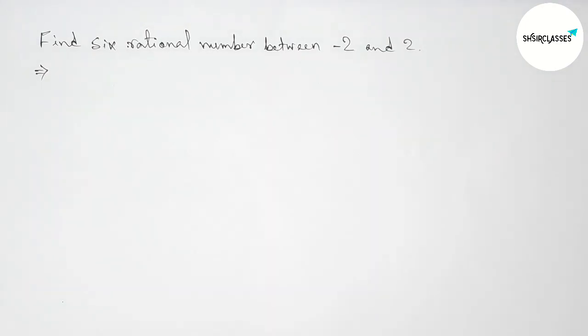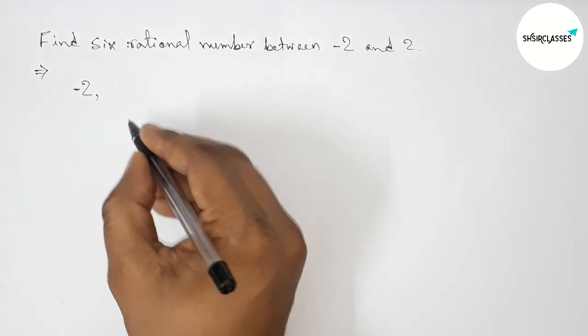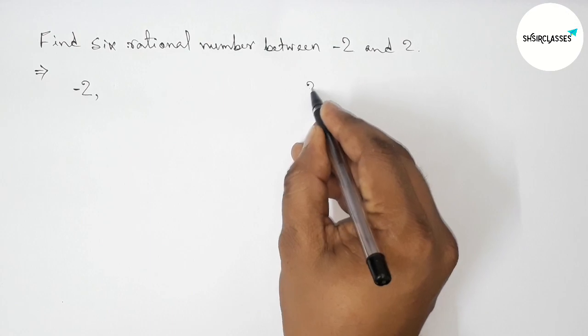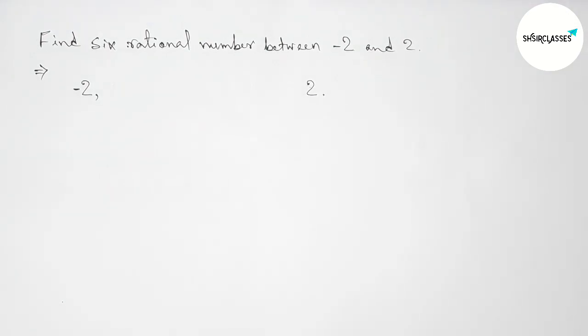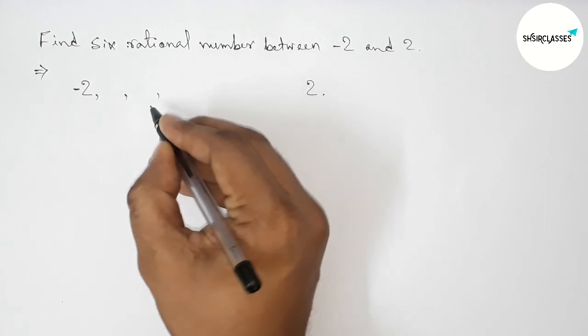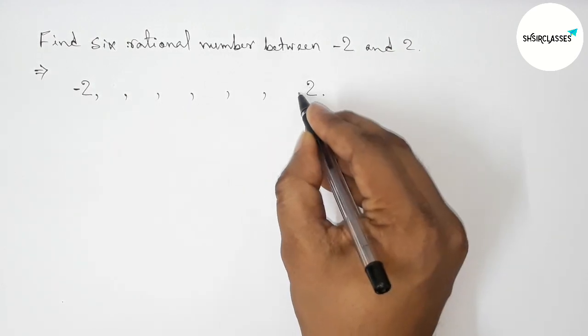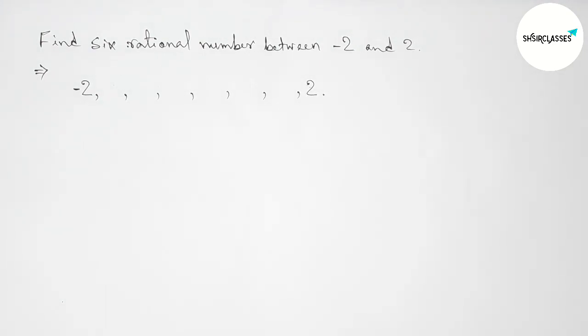First of all, let us solve this problem here. Between minus two and two we can get many rational numbers, but we have to find only six rational numbers. So first of all, taking here six blank spaces to fill all the six rational numbers by this way. Here first of all taking two rational numbers.